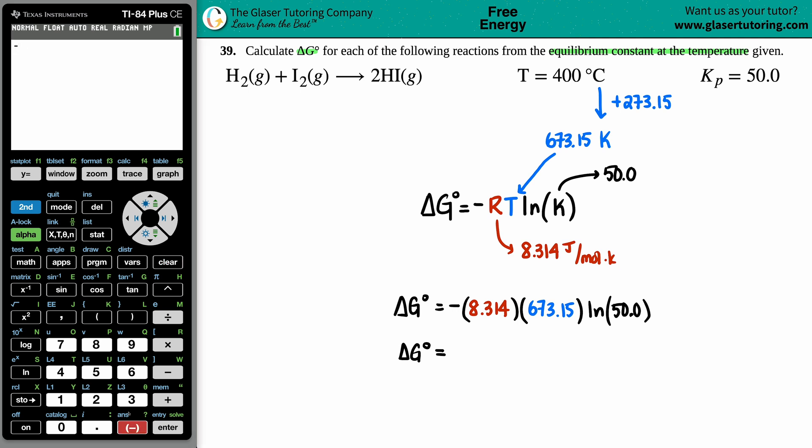is negative, because that's in the formula, 8.314 times 673.15 times ln. The ln button is over here, and now I'm just going to put in 50.0.